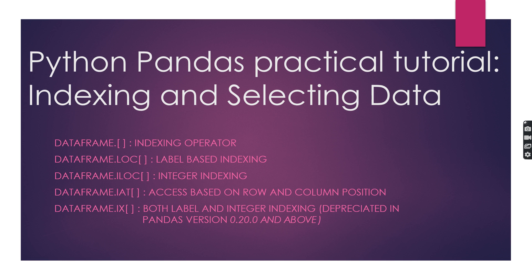In this tutorial let's have a detailed view about how indexing works through a normal indexing operator. LOC is a label-based indexing. ILOC is integer-based indexing. IAT is used if you want to access a value based on row and column position. IX is a hybrid of LOC and ILOC — a combination of label-based and integer-based indexing — but if you are using a higher version of Pandas this option will not be available, though there is a replacement for it.